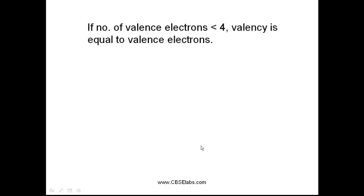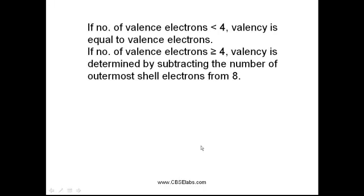We can find out the valency of oxygen now. We have two particular cases. The first case is: if the number of valence electrons is less than 4, the valency is equivalent to the number of valence electrons. Or, if the number of valence electrons is greater than or equal to 4, then valency can be determined by subtracting the number of outermost shell electrons from 8.